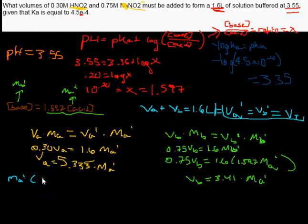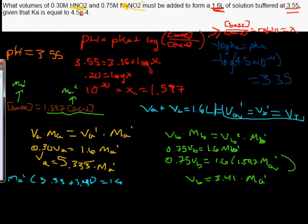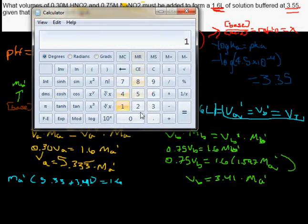And then just do 5.33 plus 3.41, because if we multiply this out, it would be 5.33 times that, plus 3.41 times that. And as you can see, it's exactly the same thing. It was 1.6. So we just do 1.6 divided by the sum of these two numbers, 3.41 plus 5.3333, whatever. And that gives us 0.183.